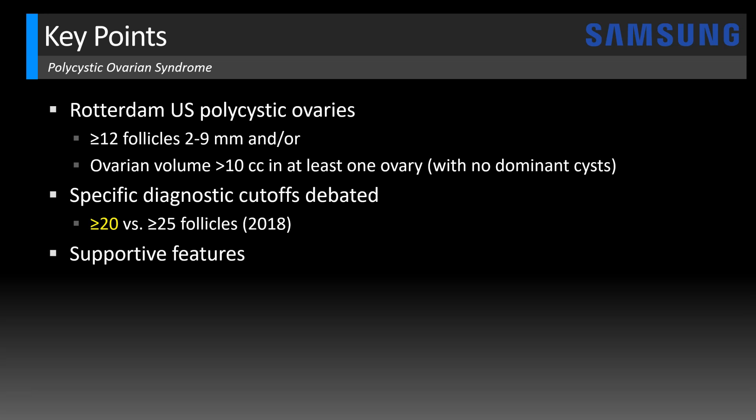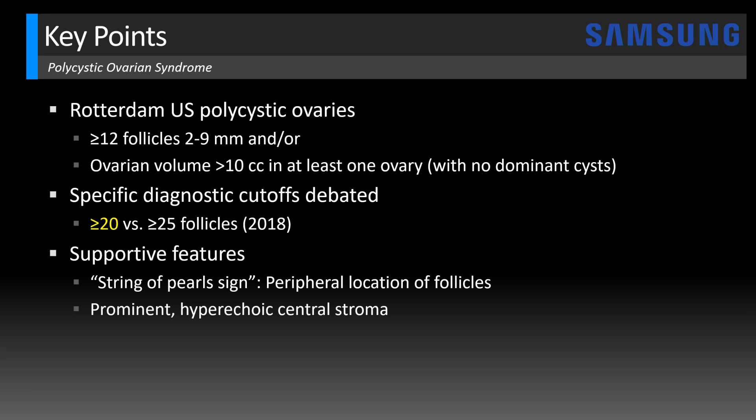Other supportive features, as we saw in this case, would be that string of pearls sign where you have the peripheral distribution of these follicles instead of randomly scattered throughout the ovary. And that usually is accompanied by this prominent central stroma, which may be echogenic or hyperechoic.